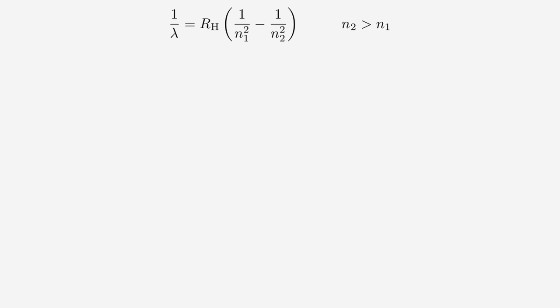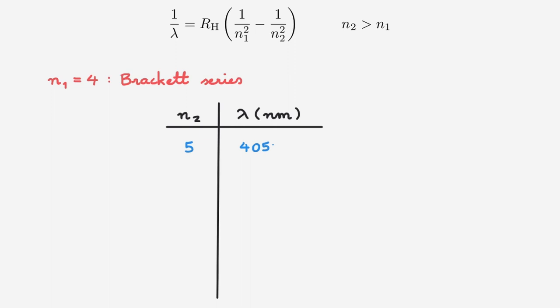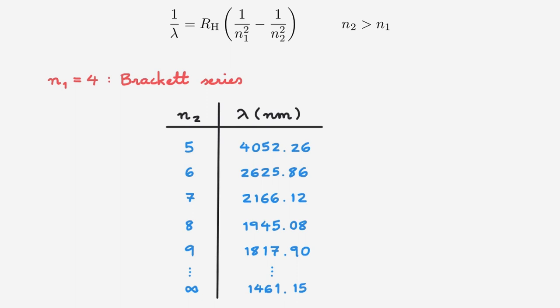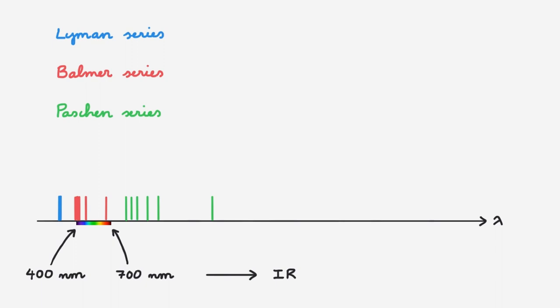The next spectral series corresponds to N1 equals 4, and it's called the Brackett series, named after Friedrich Brackett, who discovered it in 1922. Filling up the table in the usual way and going back to our plot of the electromagnetic spectrum — again zoomed out — the Brackett series starts at around 4050 nanometers and terminates at around 1460 nanometers. This places the entire Brackett series within the infrared region of the electromagnetic spectrum, and we see that the Brackett series overlaps with the previous Paschen series.